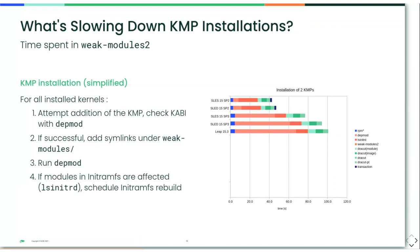For KMP installations the picture is similar, and the time spent in depmod is even more important. There's also a dark orange part representing time spent in lsinitrd. For KMP installation, weak-modules2 checks kABI compatibility for every installed kernel, creates symlinks, runs depmod for every kernel ABI check, then calls lsinitrd to check whether the installed module is part of the initial ramdisk and schedules a rebuild of the initramfs.